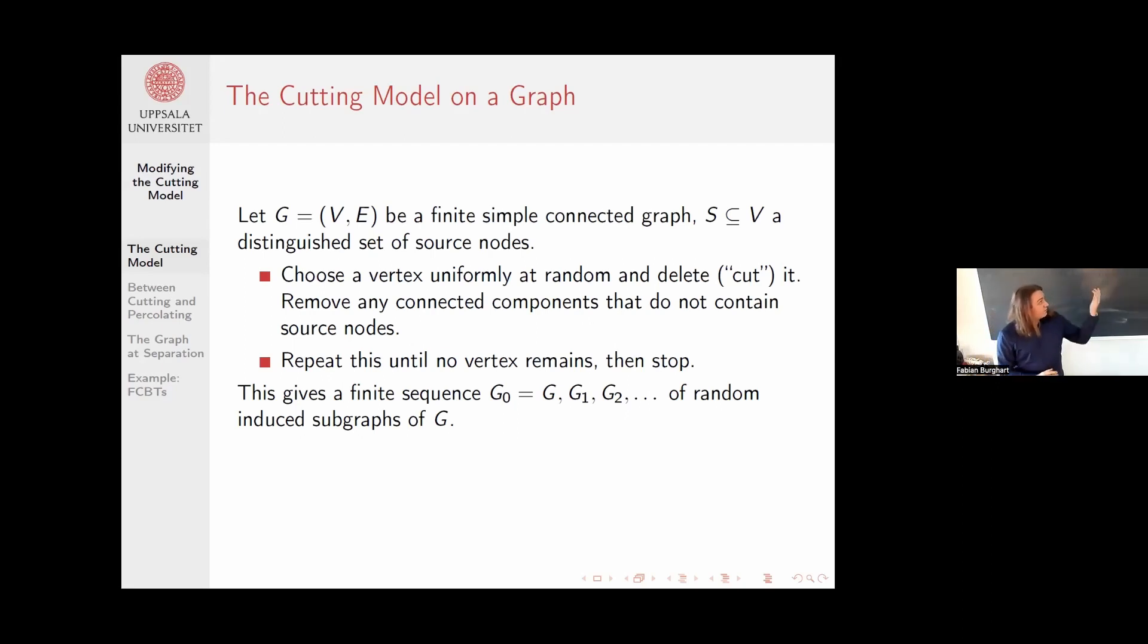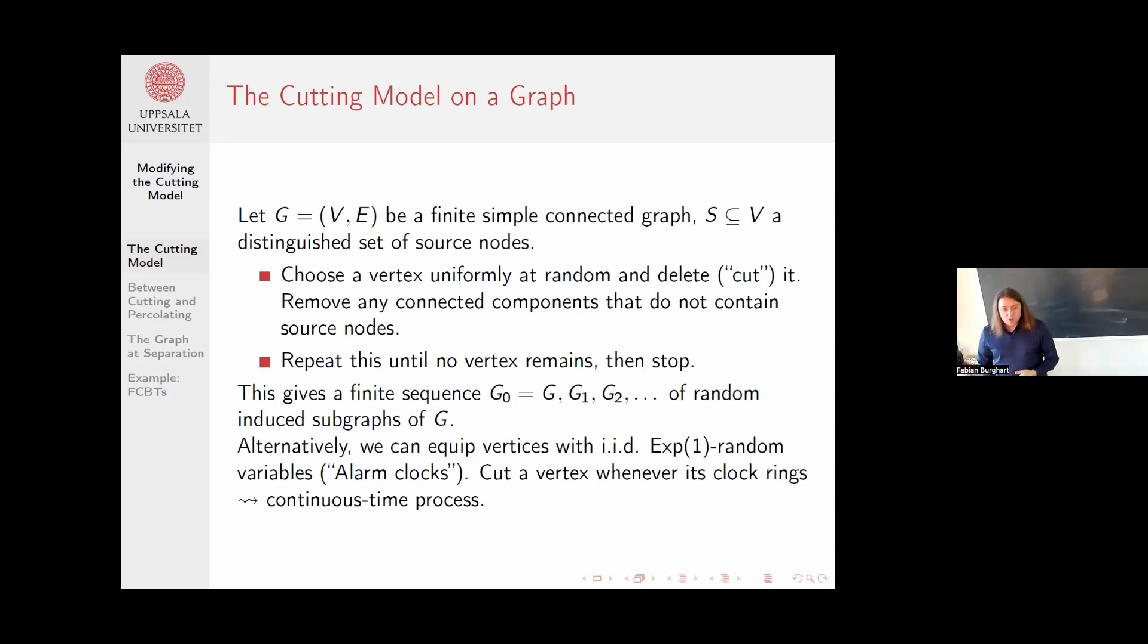This gives me a sequence of random subgraphs that decreases over time. I should mention that alternatively, instead of removing vertices one at a time, I can equip each vertex with an alarm clock, for example IID exponential random variables. Then I cut the vertex when the alarm rings. Benjamin talked about earlier the exact same idea in a different context. This gives a continuous time process instead, and it's more convenient to work with sometimes.